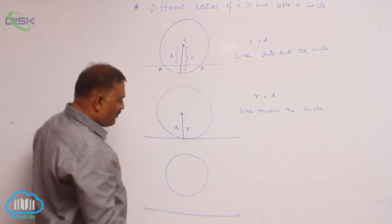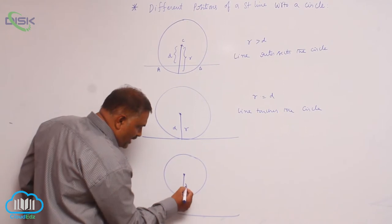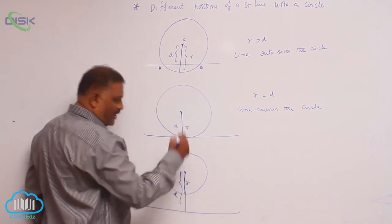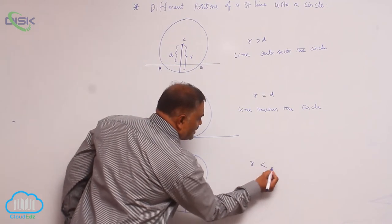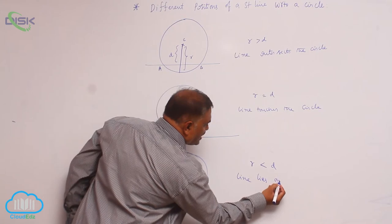Next, when the line is outside the circle, this is going to be the radius and extension, and this is going to be the perpendicular distance. R is less than D, so the line lies outside the circle.